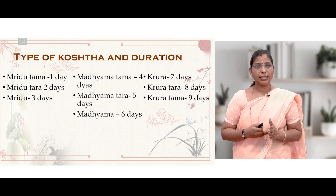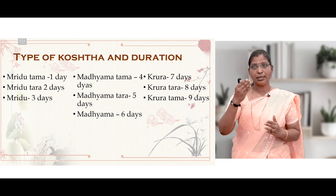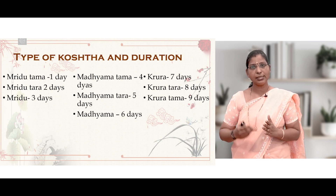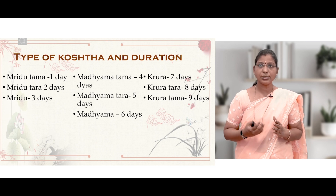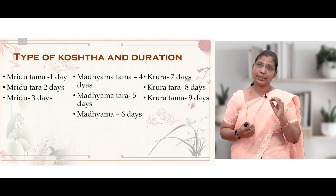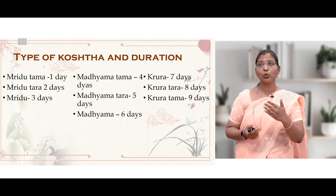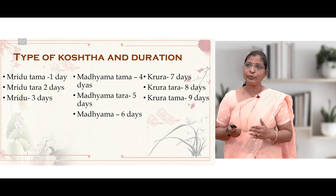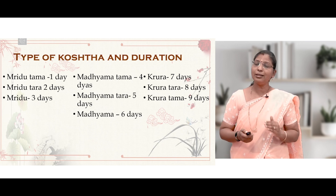Sneha Prakarsha Kala — duration required for Samyak Sneha Lakshana depends on Koshta type: Mrudu Tama Koshta takes 1 day, Mrudu Tara 2 days, Mrudu 3 days; Madhyama Tama 4 days, Madhyama Tara 5 days, Madhyama 6 days; Krura Koshta 7 days, Krura Tara 8 days, and Krura Tama up to 9 days. Charaka says Satmya occurs within 7 days, but Chakrapani states that for Krura Tama Koshta, Sneha Pana may be continued up to 9 days.